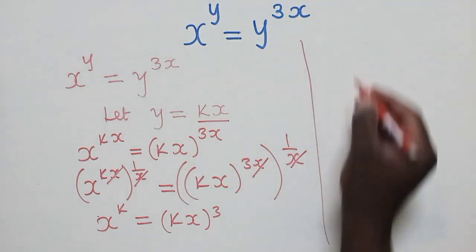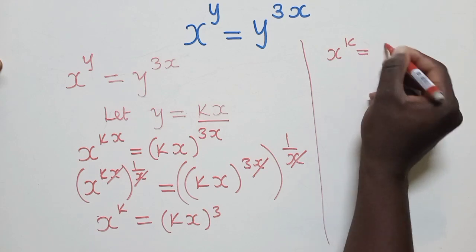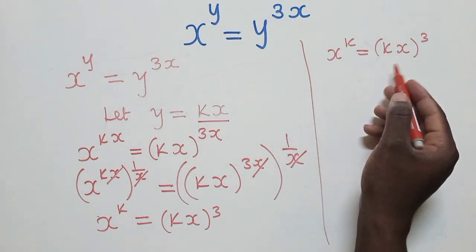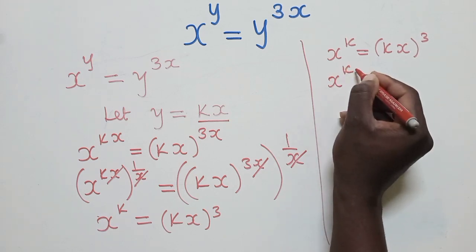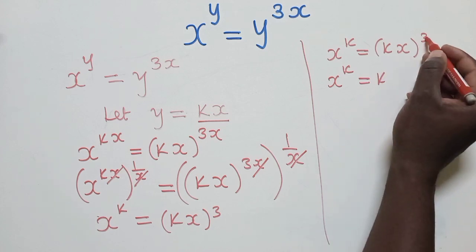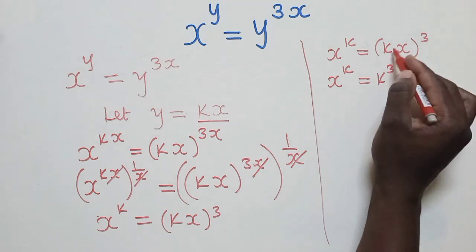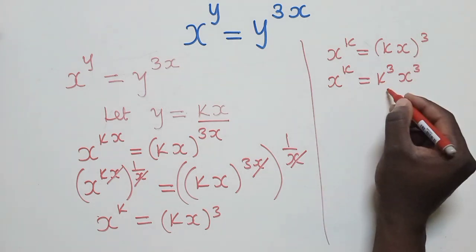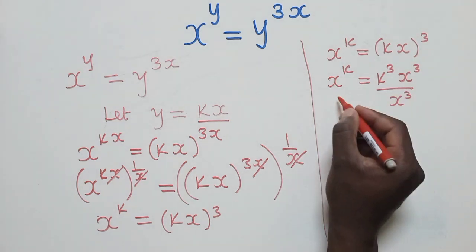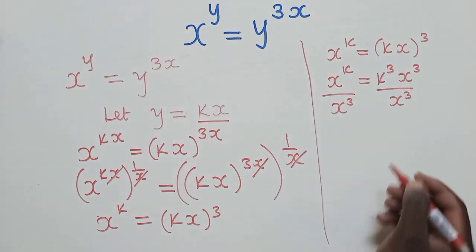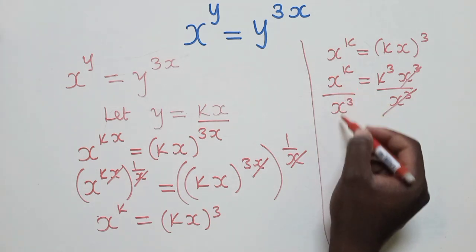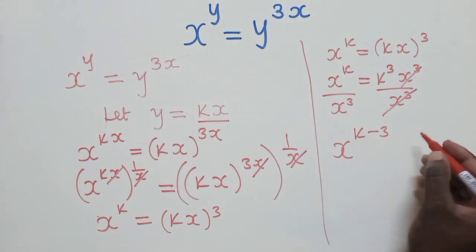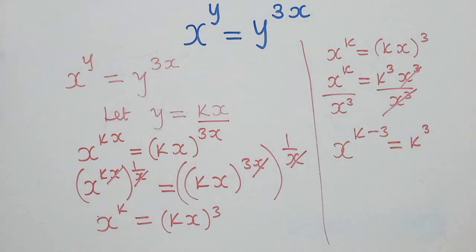So now, X power K is equal to KX power 3. We are going to make X the subject of the formula. Using the laws of indices here, we are going to divide by X power 3 on both sides, so those cancel. We have the same base, so we are going to subtract the powers. This gives us X power K minus 3, which is equal to K power 3. So we are at this point.